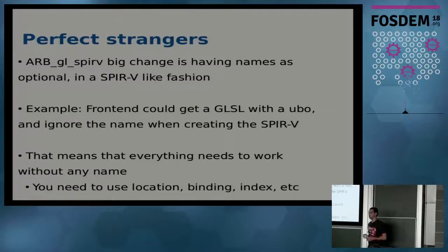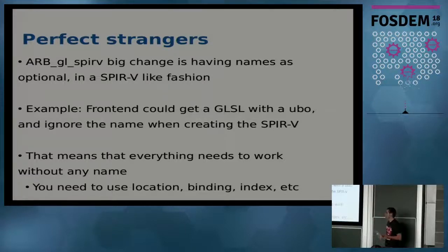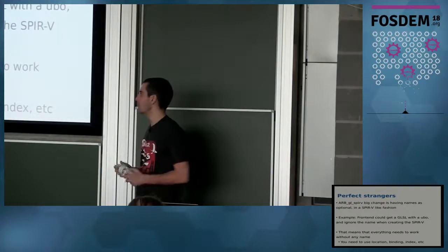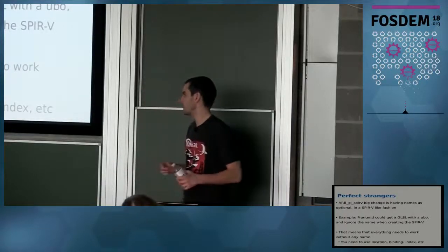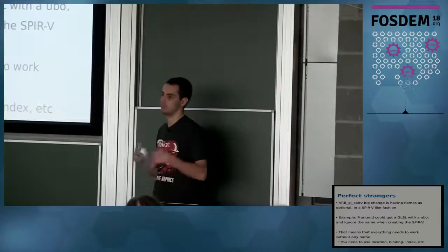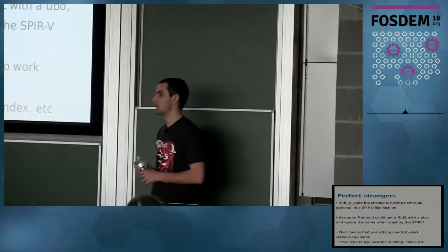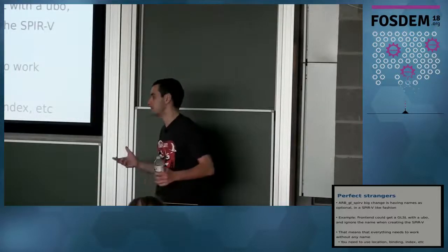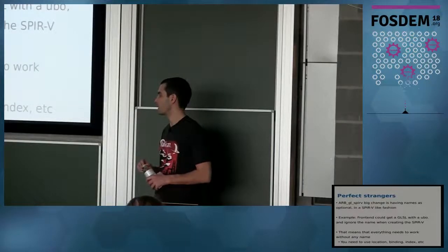The big change in SPIR-V is that variable names — uniforms, UBOs, etc. — are considered debug information and are optional. This is maintained in the OpenGL extension too. A front-end could take a GLSL shader and create the binary without any names, so when OpenGL loads SPIR-V it needs to work without names. Our current approach is that since names are optional, we are not implementing name-based lookup for now — we use locations, bindings, and indexes instead.